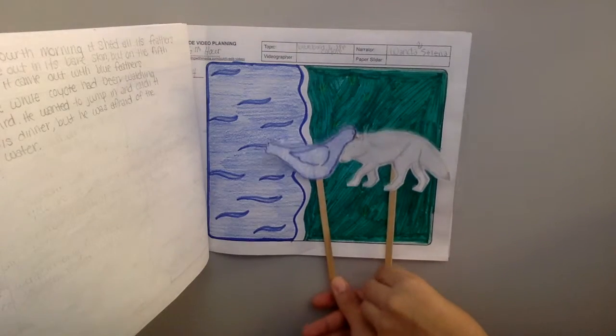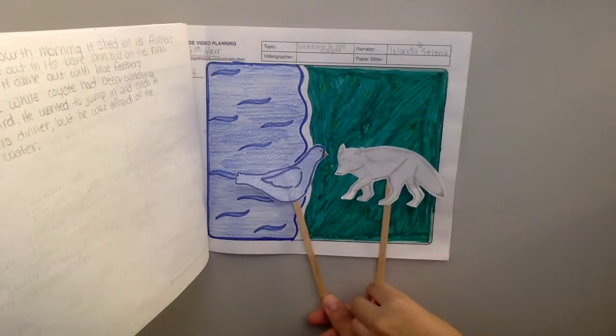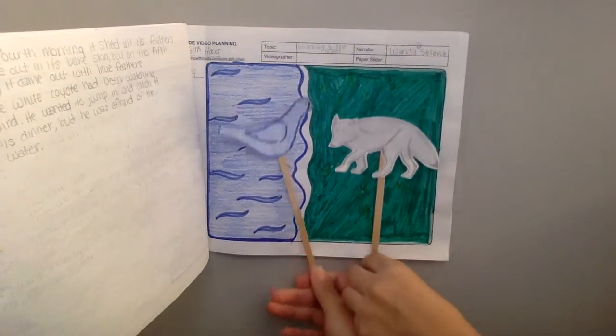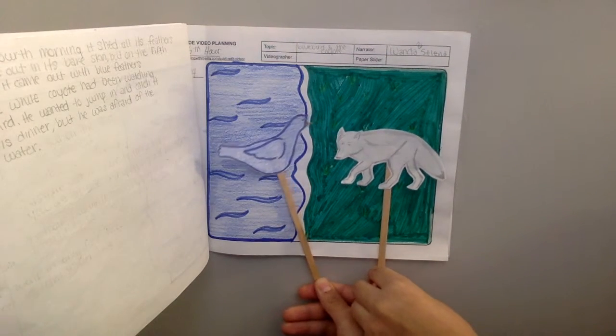You are more beautiful than anything that flies in the air. I want to be blue, too. I went in only four times, replied the bluebird. Then it taught the coyote what it had to say.